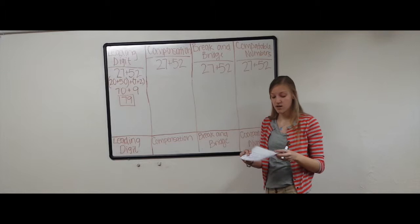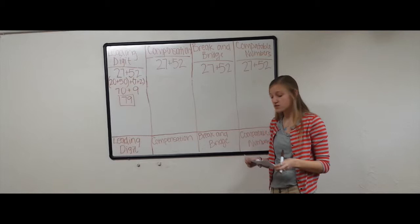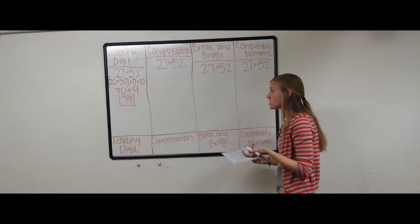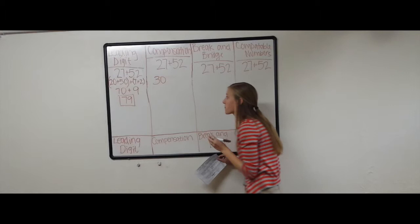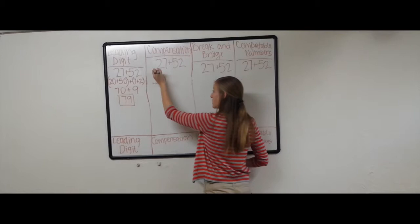Moving on to compensation. For compensation, we are making one number much easier to add. So let's change the 27. Since 7 is a harder number to add, let's change it to 30. Since the 0 in the 30 will be much easier. So if we're changing 27 to 30, we're adding 3.